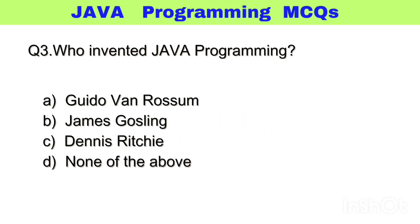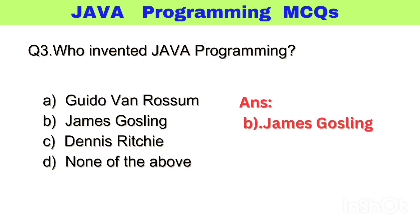Question number 3. Who invented Java programming? The right answer, option B: James Gosling.